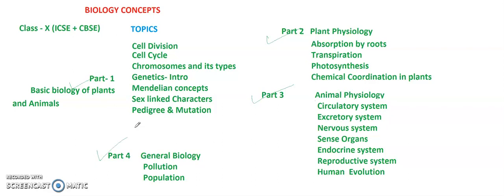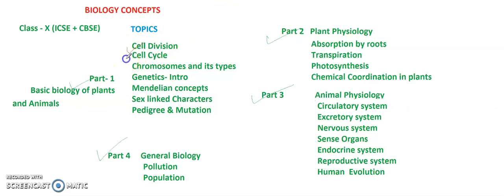Part 1 covers basic biology, keeping plants and animals at the Class 10 level — cell division, cell cycle, chromosomes, genetics, and Mendelian concepts.